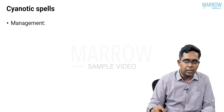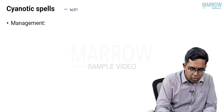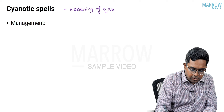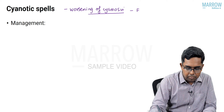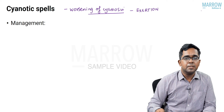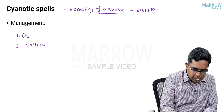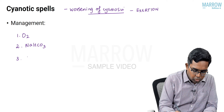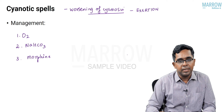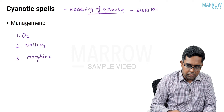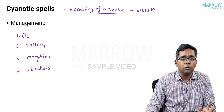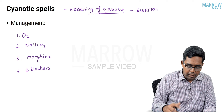An important complication of tetralogy of Fallot is the cyanotic spell, characterized by worsening of cyanosis, usually precipitated by exertion. Management includes: oxygen administration, sodium bicarbonate to counteract acidosis, morphine to depress the respiratory center and decrease hyperventilation, and beta blockers to decrease infundibular spasm — which is one of the early events of a cyanotic spell.